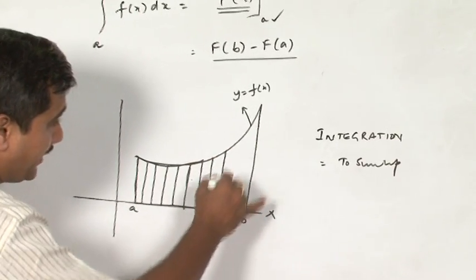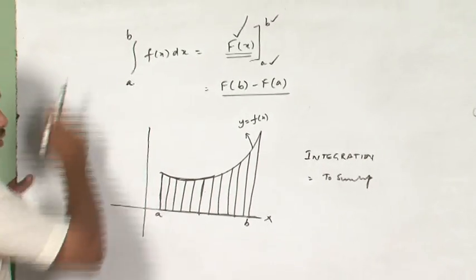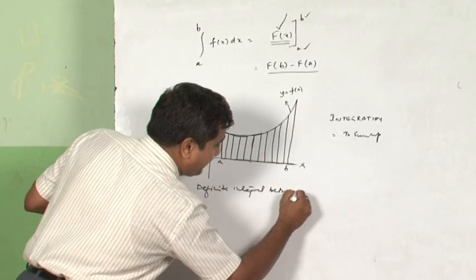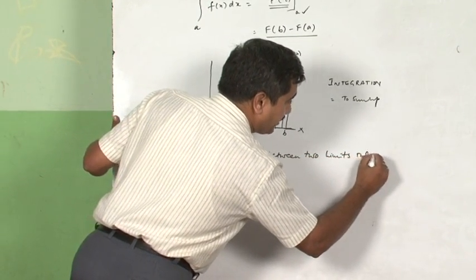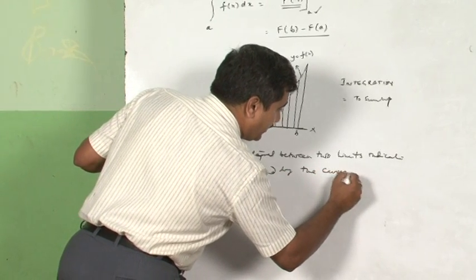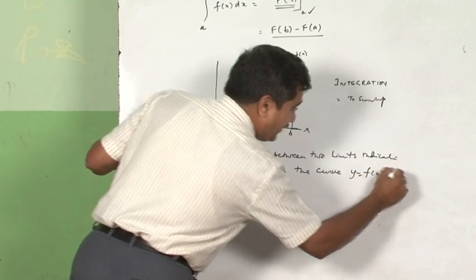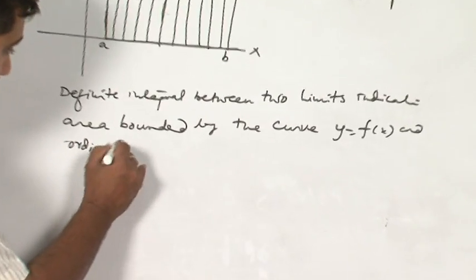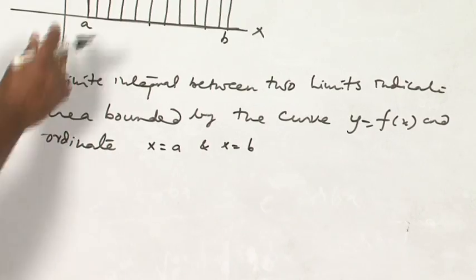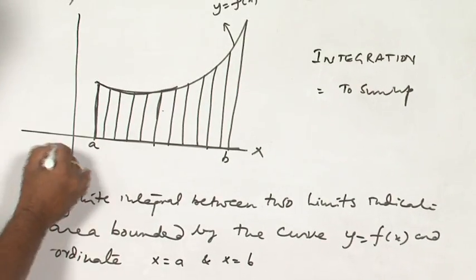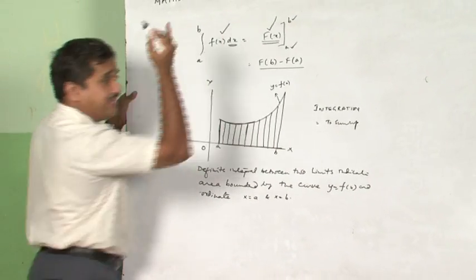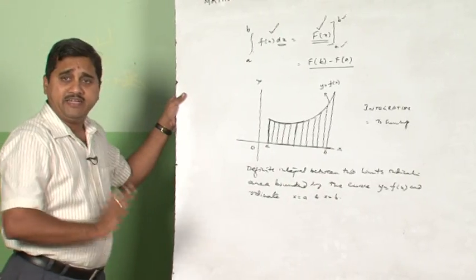The area is given by this particular function f of x dx a to b. So a definite integral indicates definite integral between two limits, two limits indicate area bounded by the curve, curve y is equal to f of x and ordinates, ordinates that is x is equal to a and x is equal to b. That means, they are parallel lines to the y-axis. So, this is always taken with respect to x-axis. Why it is with reference to x-axis? Because integration is going with respect to dx.